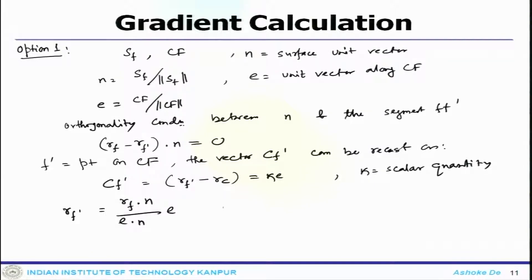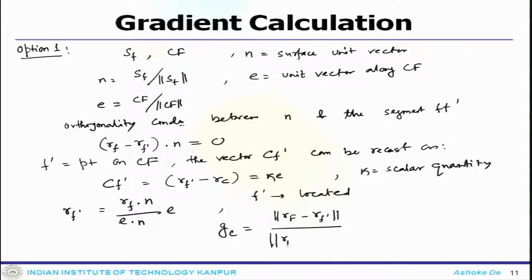If you combine everything together, Rf prime equals Rf minus (Rf dot n divided by E dot n) times E. Once F prime is located, you can find out Gc, which could be obtained as |Rf minus Rf prime| divided by |Rf minus Rc|, which is D_ff prime divided by D_fc.